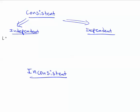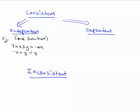Many of the systems we've come across, we can solve and find the x value and the y value — that's just one solution, which would be consistent independent. So one solution is consistent independent. An example is the equation 7x + 3y = -29 and -x + y = 7. You solve that system and find one solution.